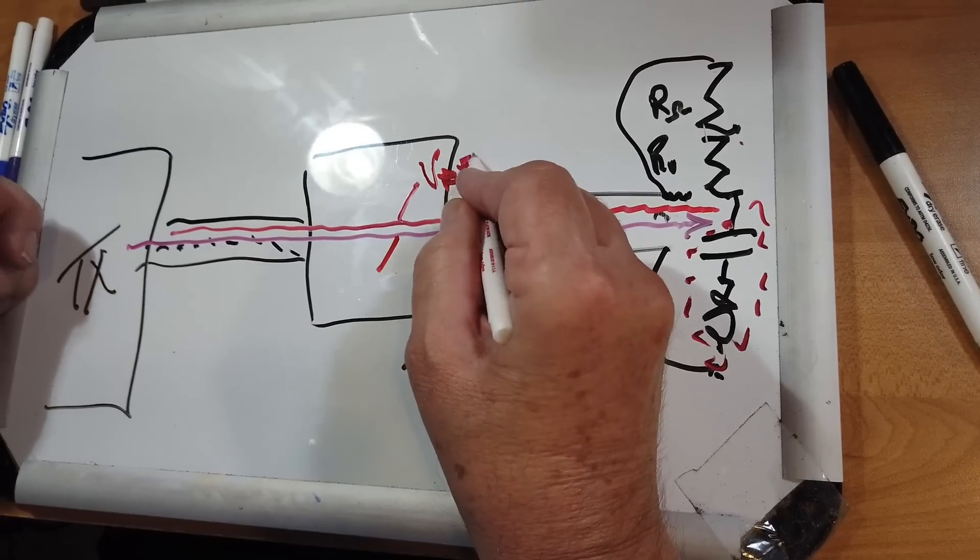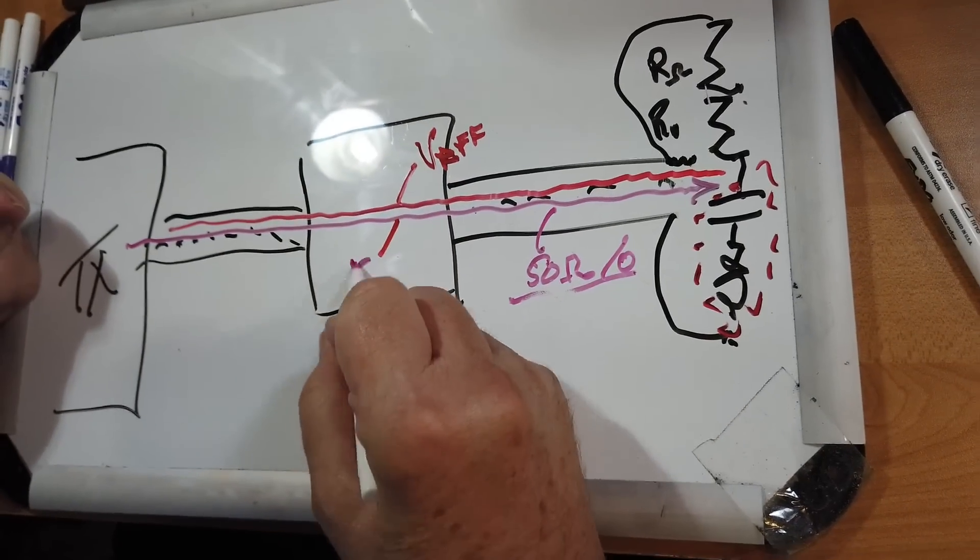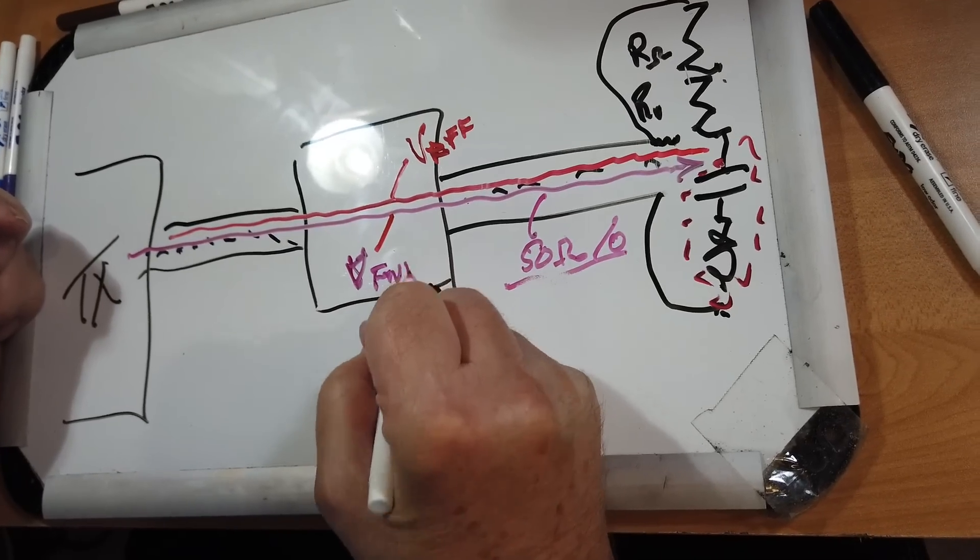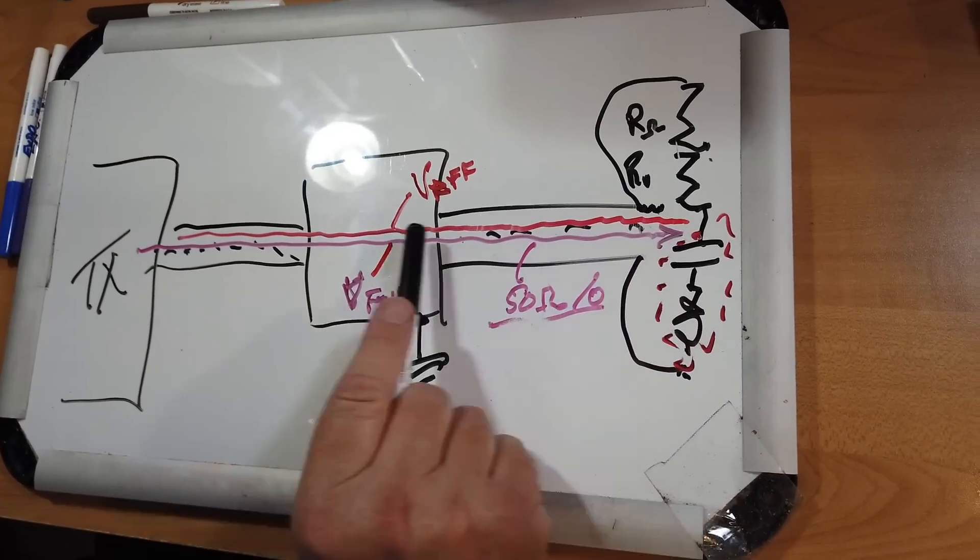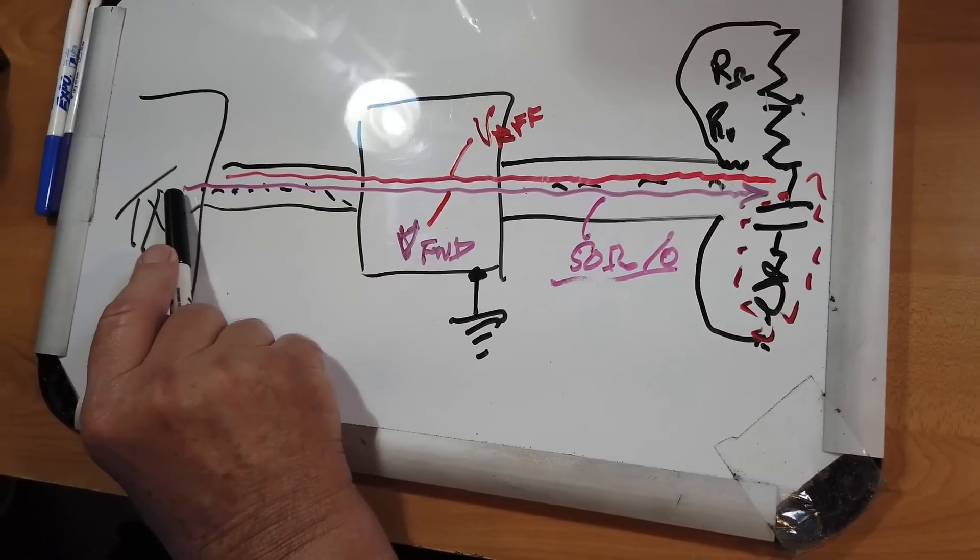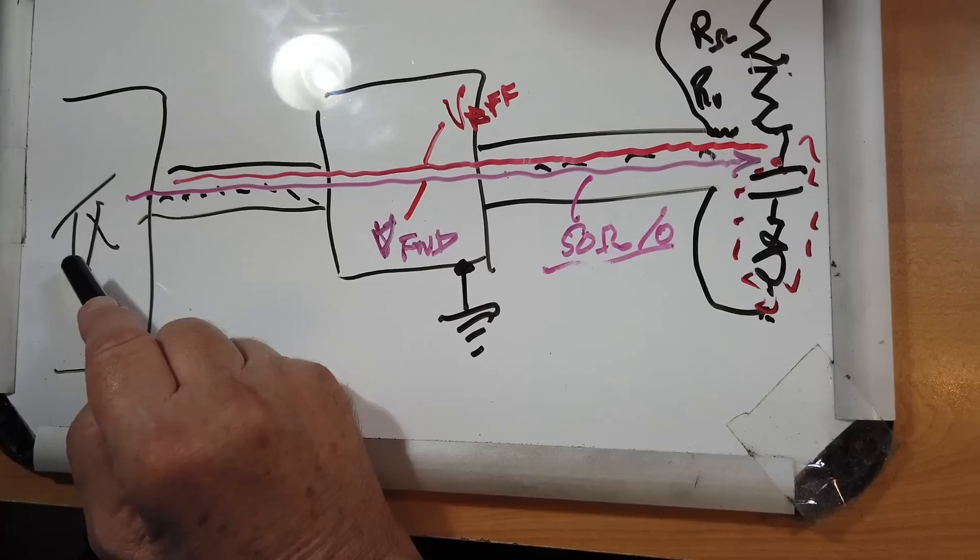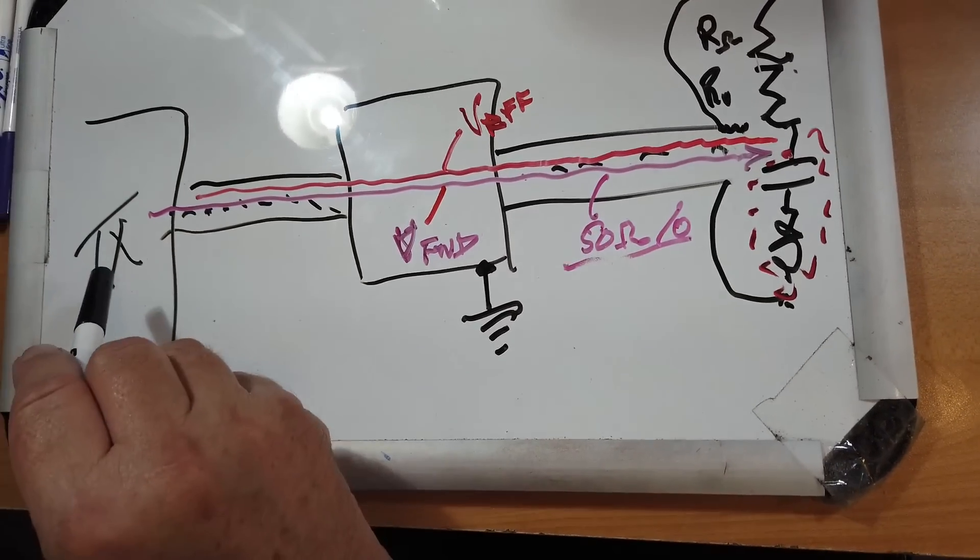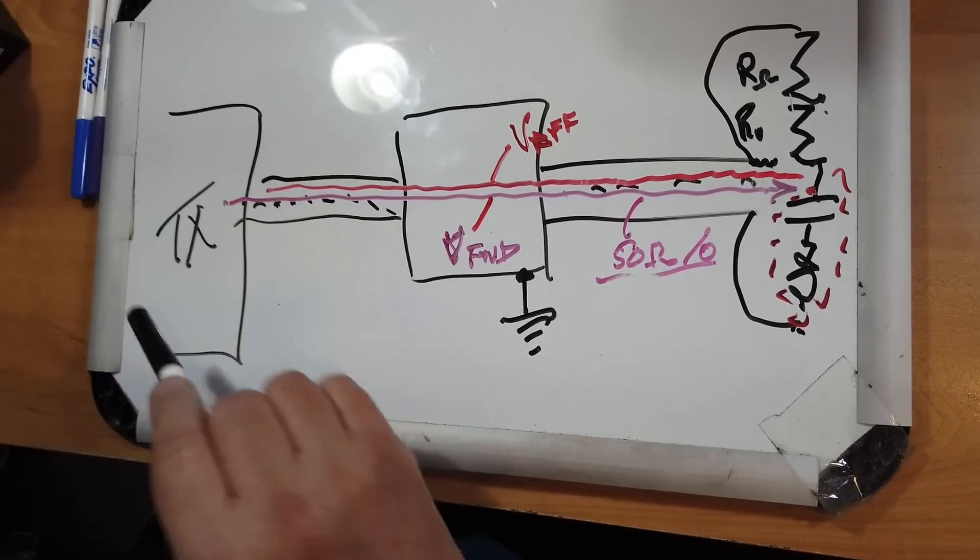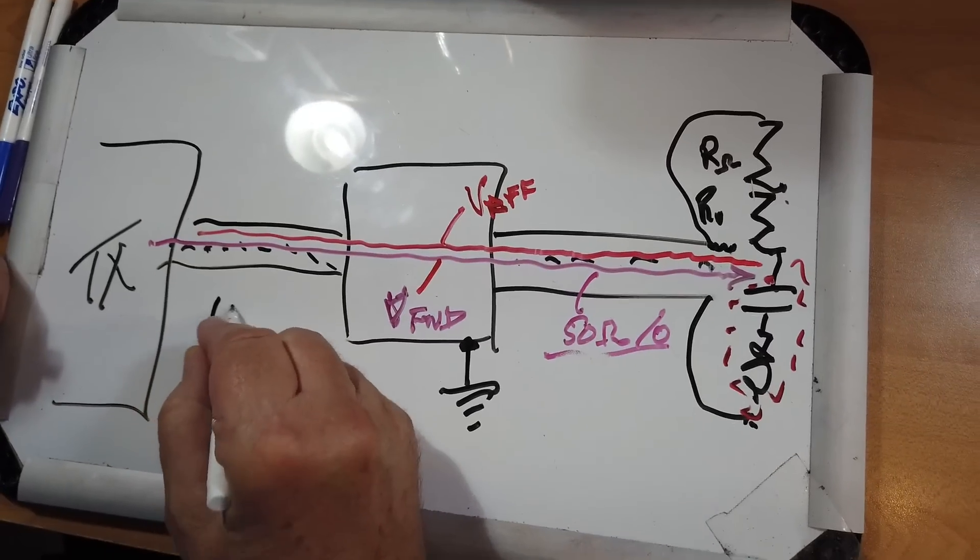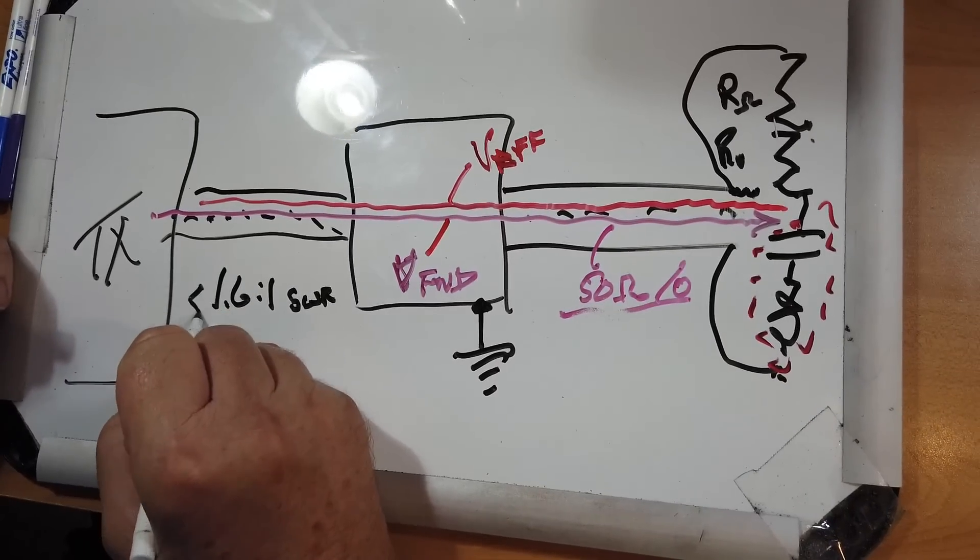Now if you don't have a tuner, this reflected power will come right back into the power amplifier. The power amplifier will then dissipate it as heat. Transmitters have circuits designed to keep lowering the power so that the reflected power is in the range of what the transmitter can handle. If you've got about a 1.6 to 1 SWR or less than that, you're good.